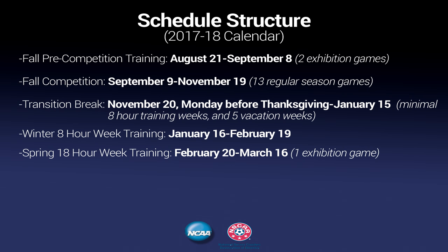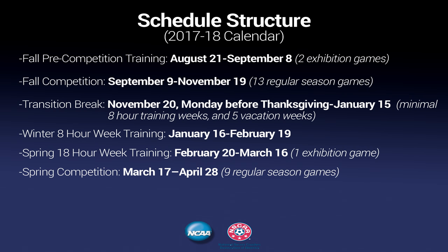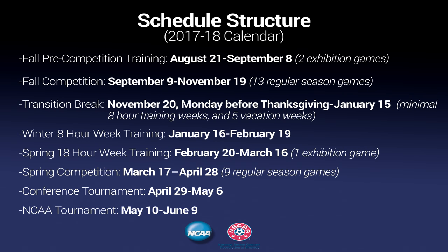Then we will have our spring 18-hour week of training from February 20th to March 16th and we will play one exhibition during that time period. With consideration for weather, we will start our spring competition March 17th and play all the way through April 28th. This will be nine regular season games, of which seven will be on weekends. The conference tournament will then be played over two weekends, April 29th through May 6th, and we will then give our NCAA tournament a chance to flourish. We will start the weekend of May 10th and culminate on the weekend of June 9th in a single game championship, and we feel this is a calendar that makes a lot of sense.